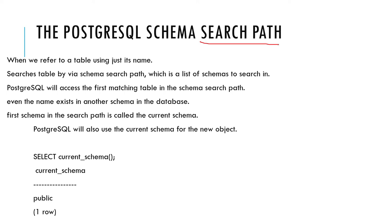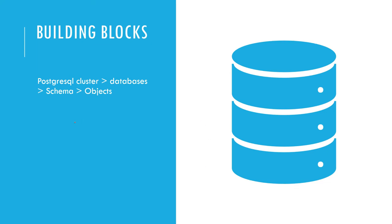There is something called a search path. If I am connected to the 'DVD rental' database and I say 'SELECT * FROM actor', in which schema is it going to look? By default it looks into the public schema. If you run 'SHOW search_path', it will show two values: '$user' and 'public'. If a schema with the same name as the connected user exists, the object will be searched there first; otherwise it falls back to the public schema.